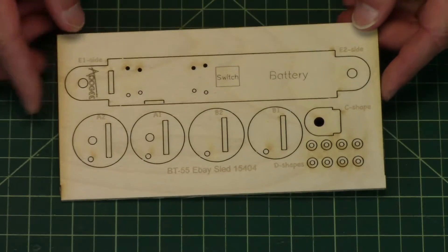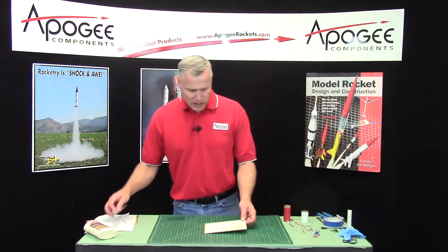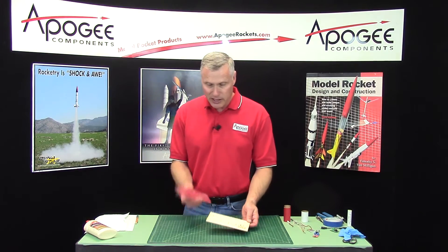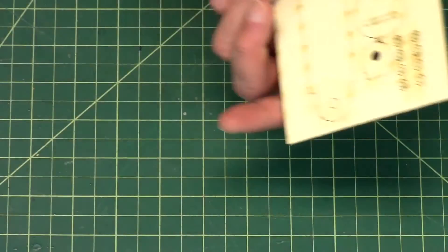We're going to start with the ebay sled, which is this plywood piece right here. To start, I want you to take some sandpaper, this is about 220 grit sandpaper, and I want you to sand both sides.